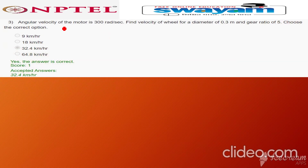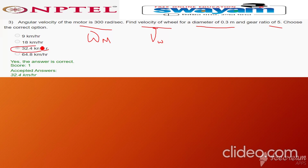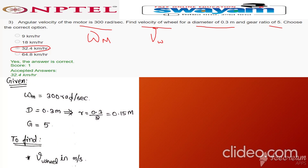Third question: the angular velocity of the motor omega_m is given as 300 radian per second. Find the wheel velocity in kilometer per hour. Diameter is given as 0.3 meter and gear ratio is 5. The correct answer is 32.4 kilometer per hour. Radius r is equal to 0.3 divided by 2, which is 0.15 meter.